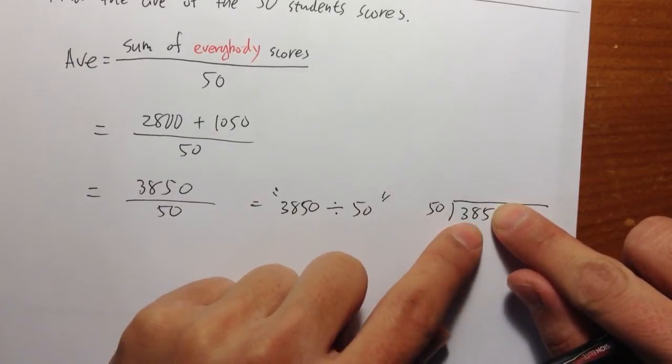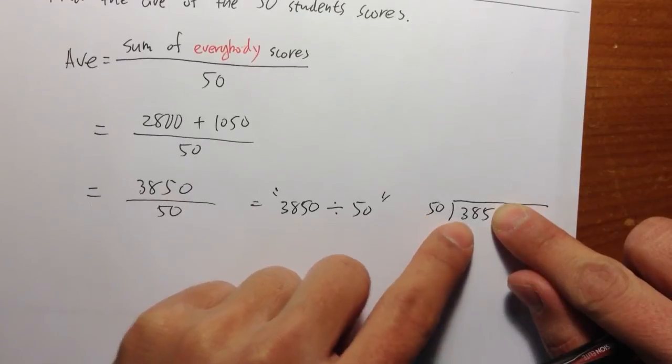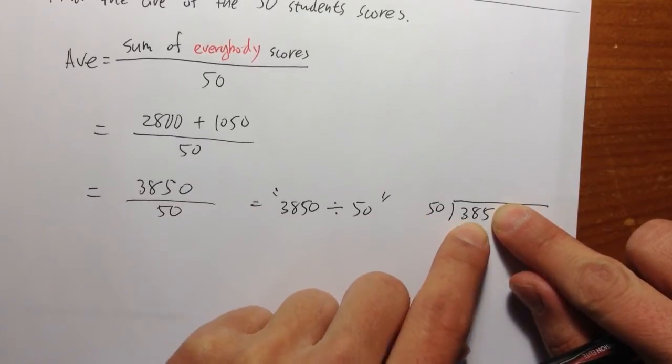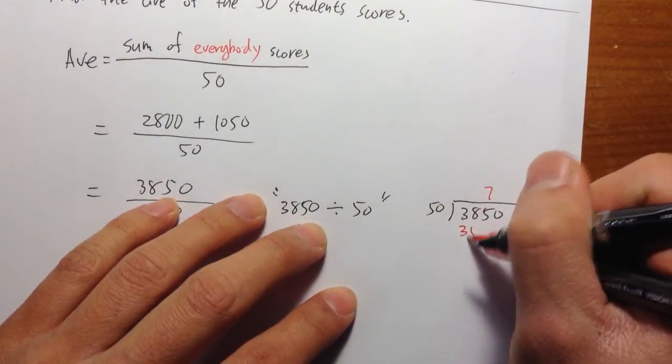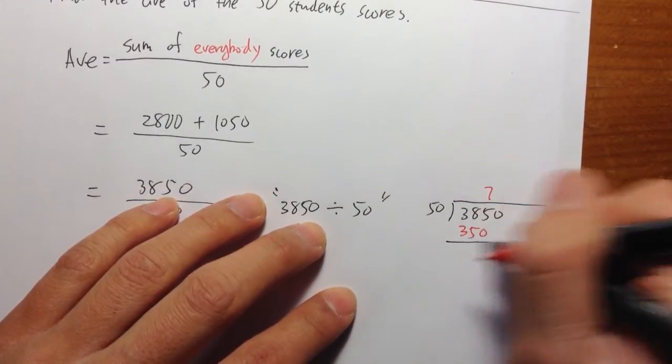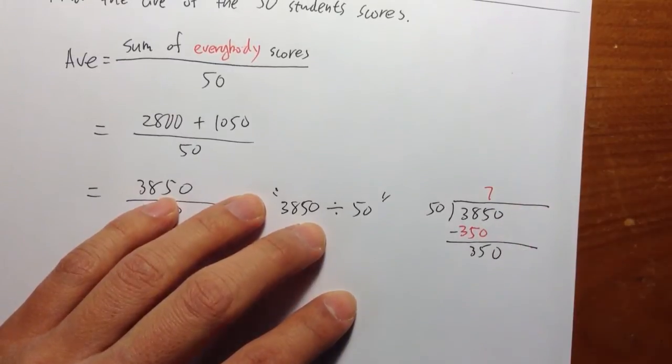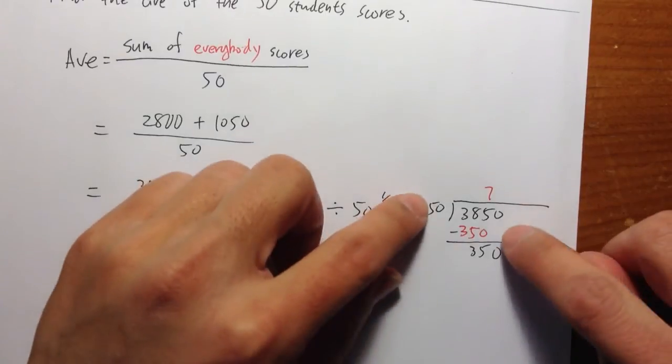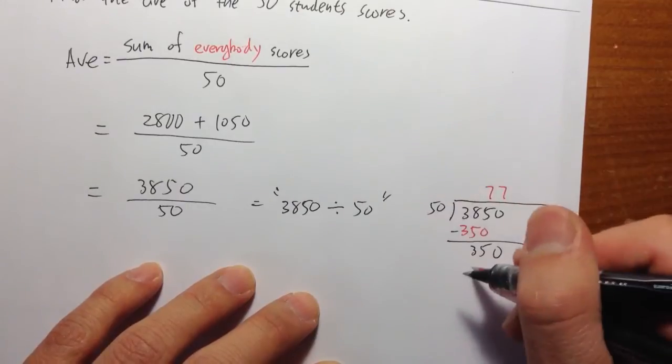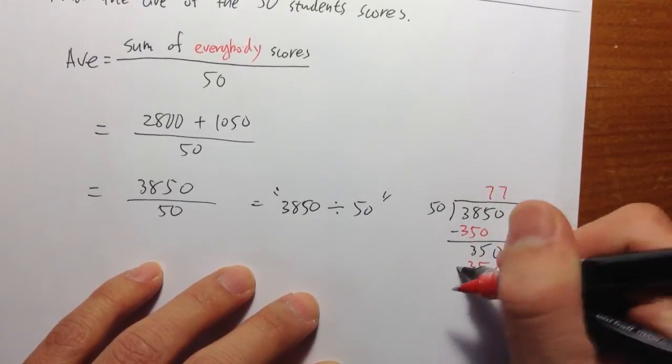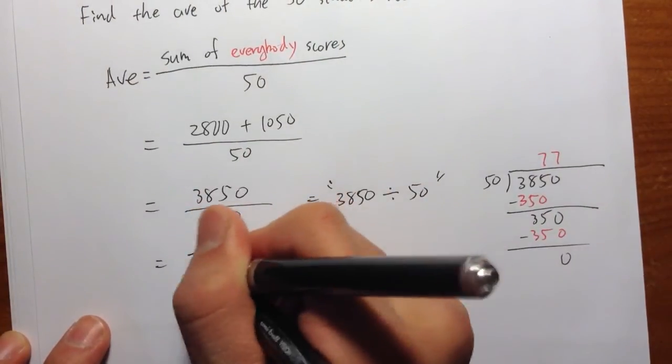So 50 does not go into 38, let's look at 50 and 385. 50 goes into 385 seven times. Seven times 50, we get 350. Subtract, we get 35 left. Then bring down the zero right here. 50 goes into 350 seven times. Seven times 50, 350. When you subtract, you get zero. Alright, so the average is 77.